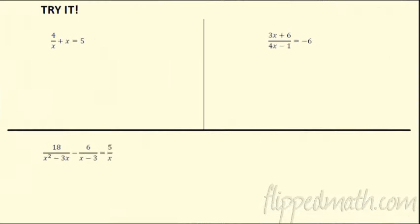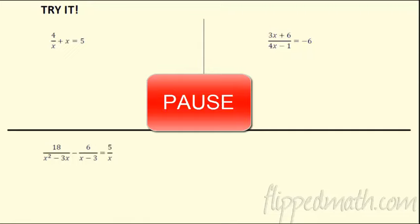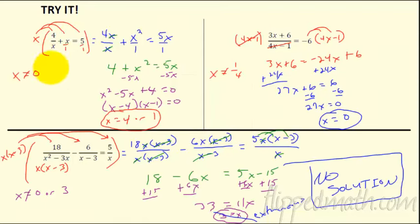Here are the answers to the try-it problems. The first: x equals 4 or 1 — x can't be 0, and we're okay. The second: x equals 0, with the extraneous solution being 1 over 4, so we're safe. The last one: x can't be 0 or 3 — solving gives x equals 3, which is extraneous, so the answer is no solution. That wraps up solving rational equations and the chapter. Good luck, and peace out.